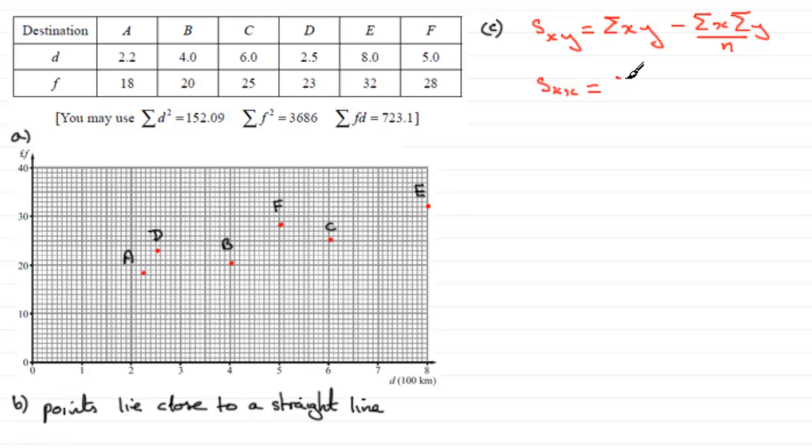And for this part, it would be Sigma X times another Sigma X. In other words, Sigma X all squared over N.